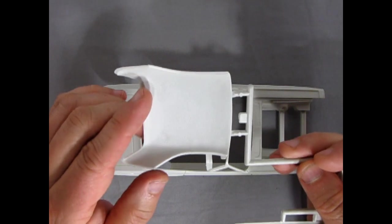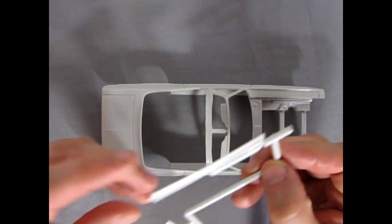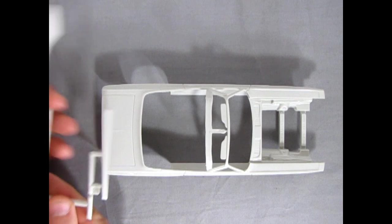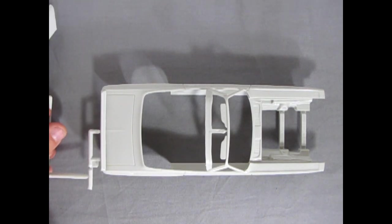A couple of little mold marks. You might want to try to remove them. And then we've got our rear spoiler here, which goes across on the deck. Just like that.